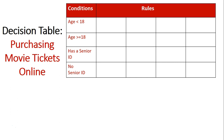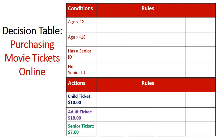Based on different combinations of these conditions occurring, we're going to have the second part of our table, which is actions. There are three actions that are going to take place: they're either going to get a child ticket which is $10, an adult ticket which is $18, or a senior citizens ticket which is $7.